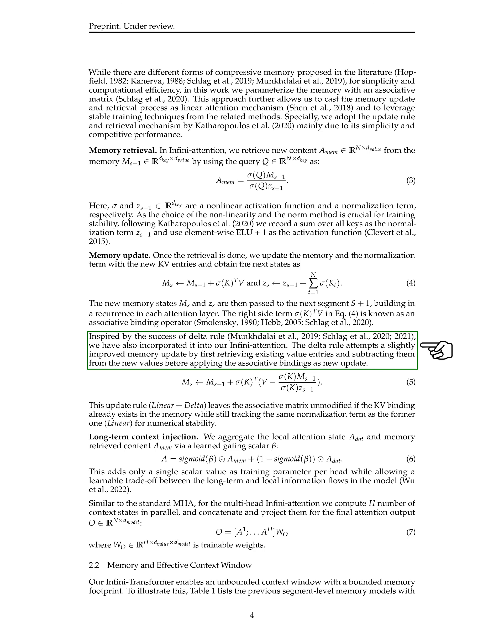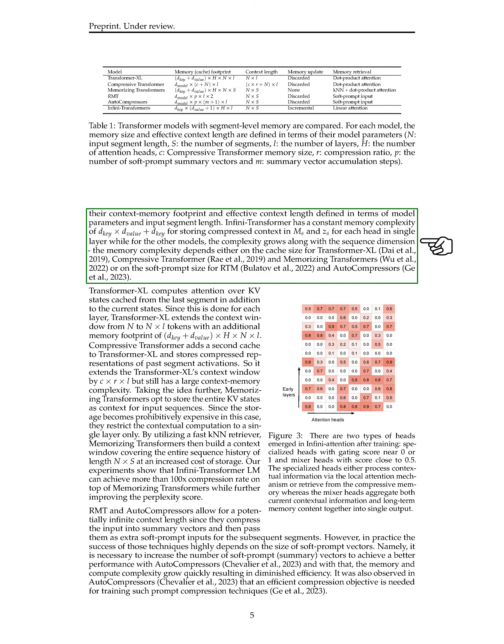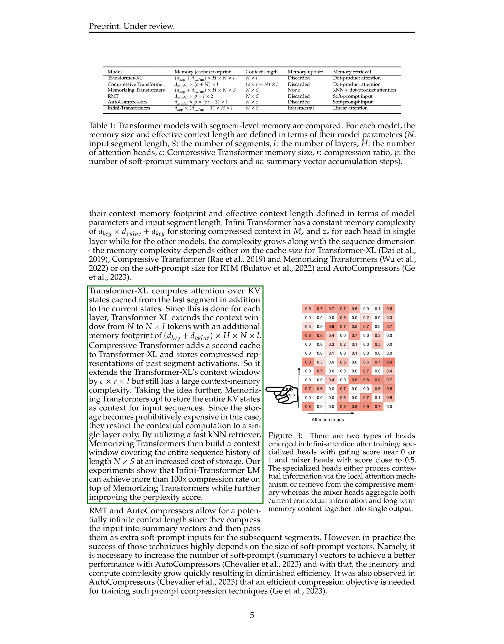In multi-head InfiniAttention, we compute multiple context states in parallel, concatenate them, and project them to get the final attention output O. Our InfiniTransformer provides an unlimited context window with a limited memory footprint. Compared to other memory models, InfiniTransformer has a constant memory complexity for storing compressed context in each head in a single layer, whereas other models have growing memory complexity depending on the sequence dimension. Our experiments demonstrate that InfiniTransformer achieves a significantly higher compression rate compared to memorizing transformers while improving the perplexity score.